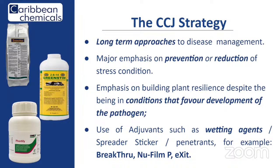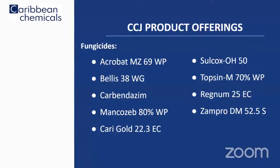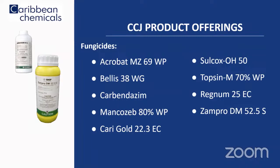Carbon Chemicals has a wide range of fungicide products. We have our Acrobat, Obelis, Carbonazim, Mancozeb, Carigold, Sulcox, Topsin, Regnum, and Zampra. These are broad-based and cover a wide array of different active ingredients so you can rotate safely without finding yourself unable to control a particular pathogen. Our portfolio gives you a wide cross-section of active ingredients so you can rotate safely through various groups.